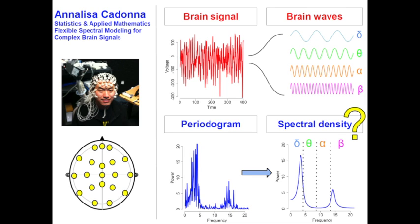What we have is a signal for each location evolving over time. This signal looks really messy and we cannot really understand what's going on, but this signal can be decomposed into different components called brain waves. Each brain wave is associated to a specific state of mind.